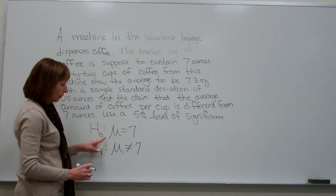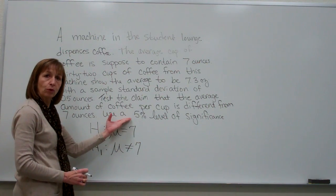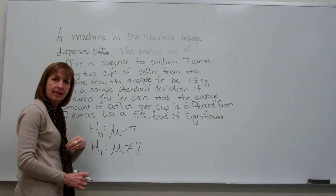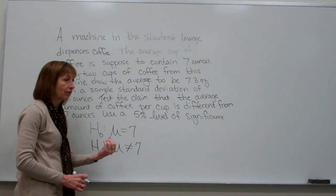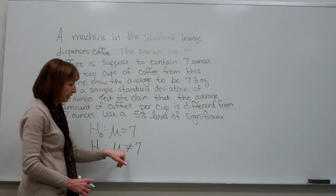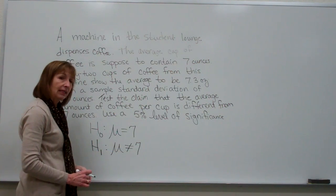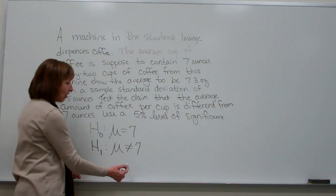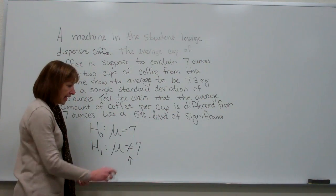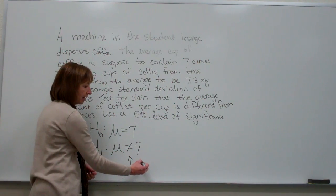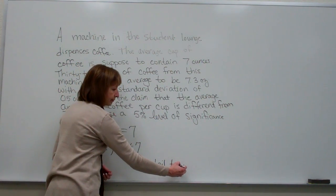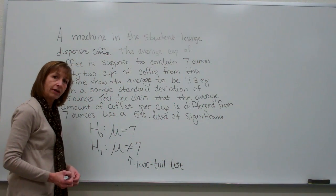Remember, your alternate hypothesis often comes from the wording of what they ask you to test. If it says 'less than,' use less than; if it says 'greater than,' use greater than; if it says 'different from' or 'not equal to,' that's when you use not equal to. Since the alternate hypothesis here is a not equal to, it's a two-tail test.